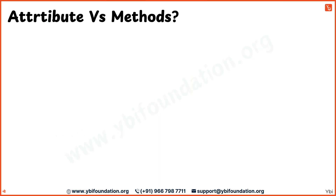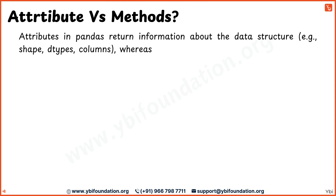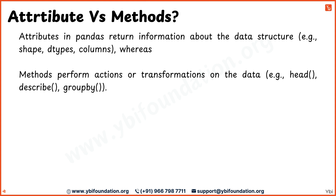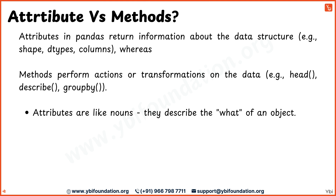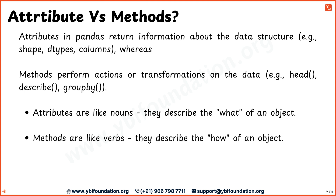Now understand the difference between attributes and methods. In pandas, attributes return information about the data structure itself. For example, attributes like shape, dtypes, and columns tell you about the structure and layout of your DataFrame or Series. On the other hand, methods perform actions or transformations on the data. Examples of methods include head, which shows the first few rows of data; describe, which provides summary statistics; and groupby, which groups data based on a certain column. You can think of attributes as nouns — they describe what of an object, like its characteristics or properties. And you can think of methods as verbs — they describe how an object works, showing how you can interact with or modify the data. Attributes help you understand your data while methods allow you to work with your data.